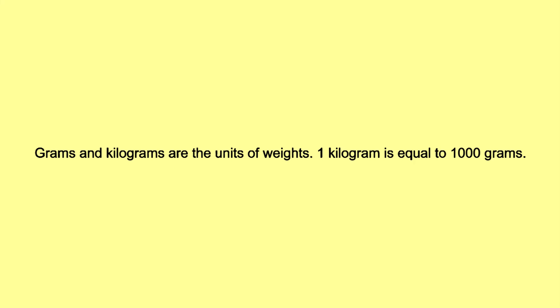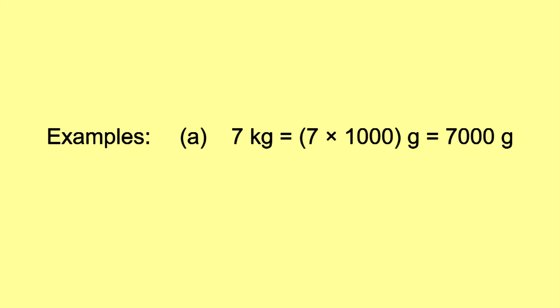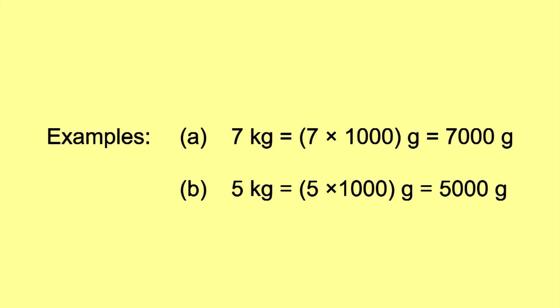Conversion of units of weight. Grams and kilograms are the units of weight. 1 kilogram is equal to 1000 grams. In order to convert kilograms into grams, we multiply the number of kilograms by 1000. Example: 7 kilograms = 7 × 1000 = 7000 grams. 5 kilograms = 5 × 1000 = 5000 grams.